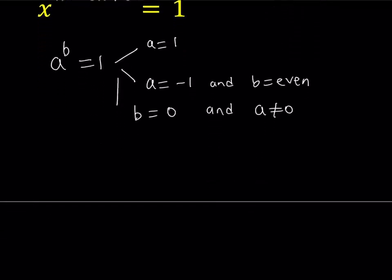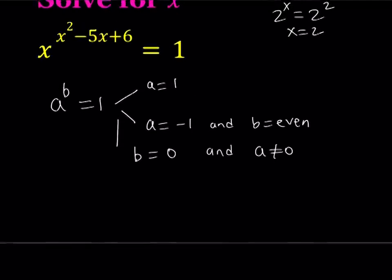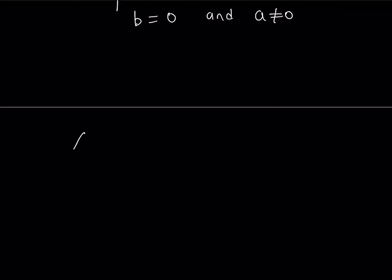So the first one, we're going to be looking at the base being 1. So I have x to the power x squared minus 5x plus 6 equals 1. And what happens if x is equal to 1? Then I get a valid solution. So x equals 1 is a valid solution. That's my first case.